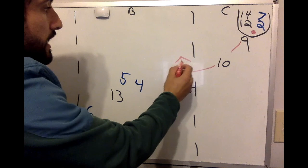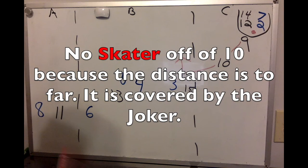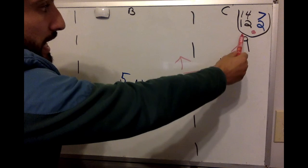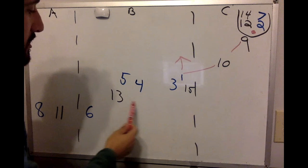Now we've got an attack. There's no skater when it's off of 10 because they have the joker. The joker is always on the outside shoulder of the 10 with the first group. Once these guys go up and attack, all four of these players reset into a small attacking line here.